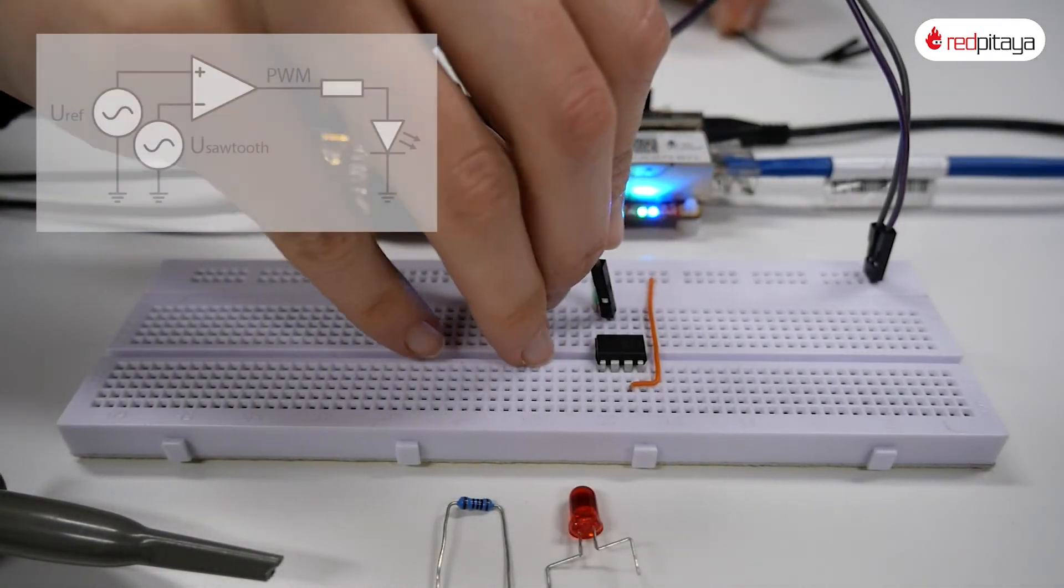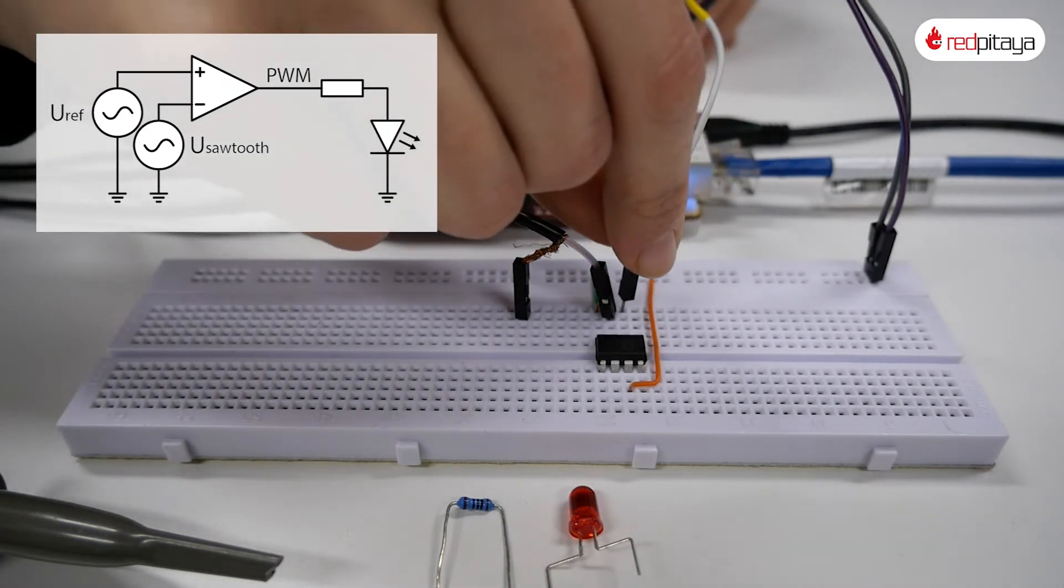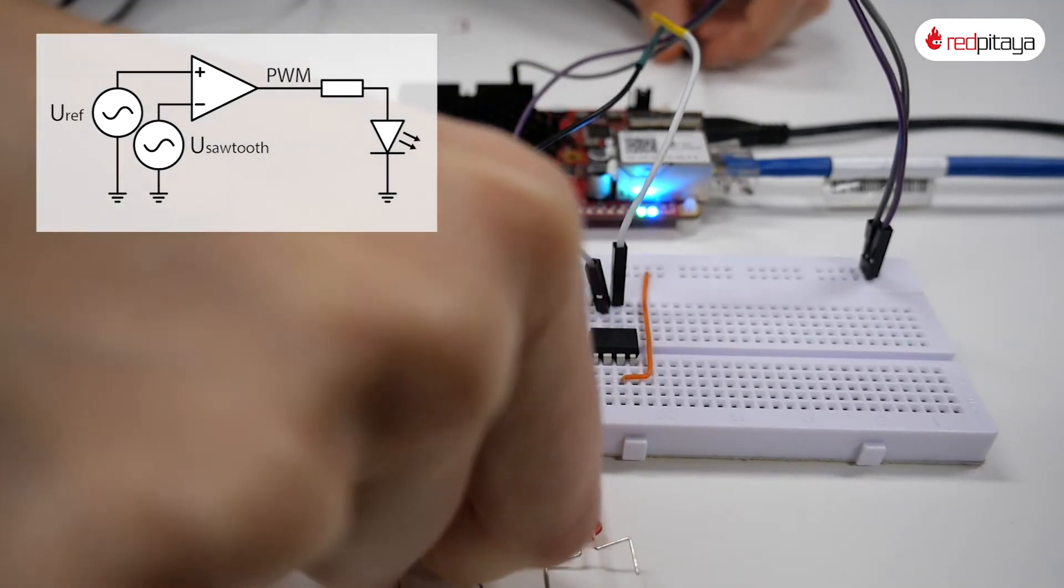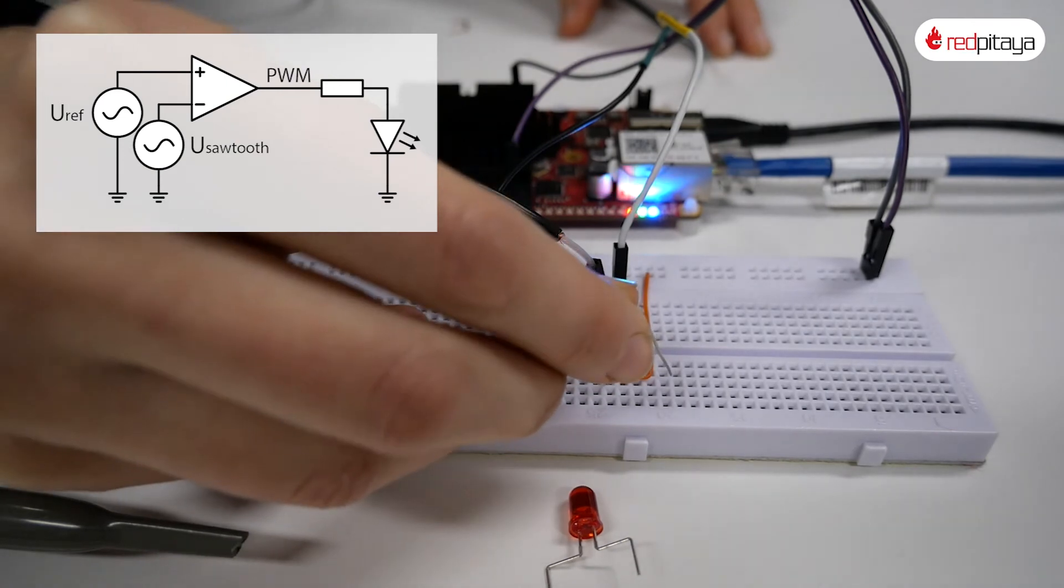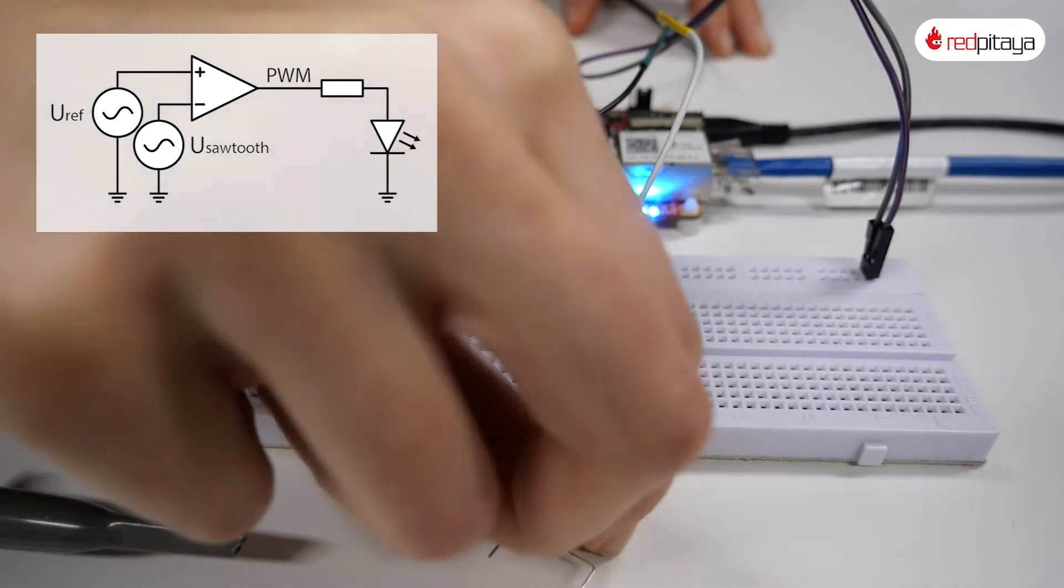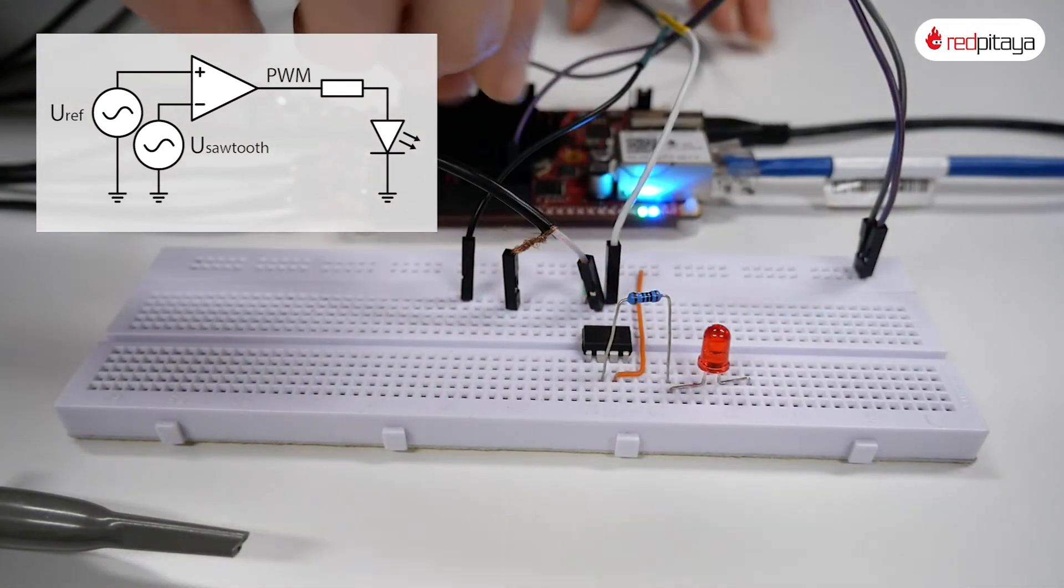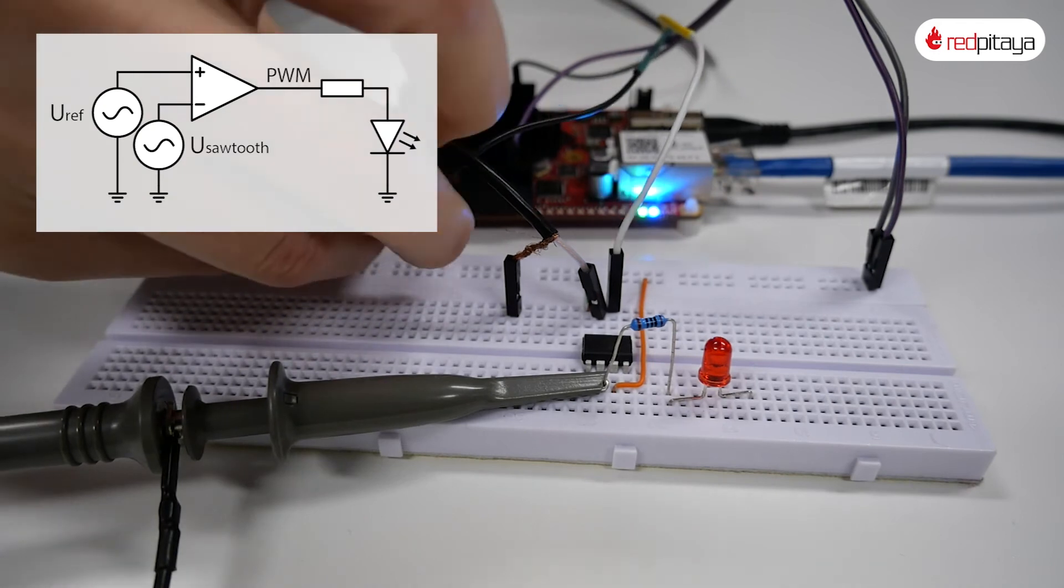Sawtooth and reference voltage will be supplied by Red Pitaya. As previously we'll be using an op-amp as comparator. Sawtooth is fed into comparator's inverting input and reference voltage is fed into non-inverting one. Let's just connect the modulator's output to the Red Pitaya's input and we're done.